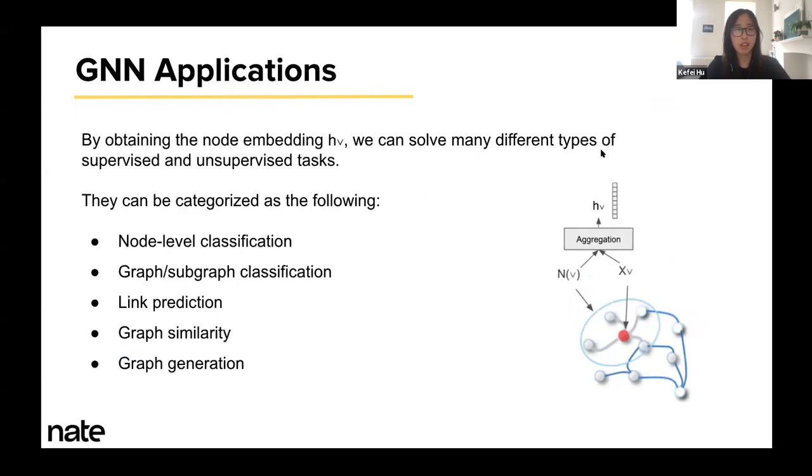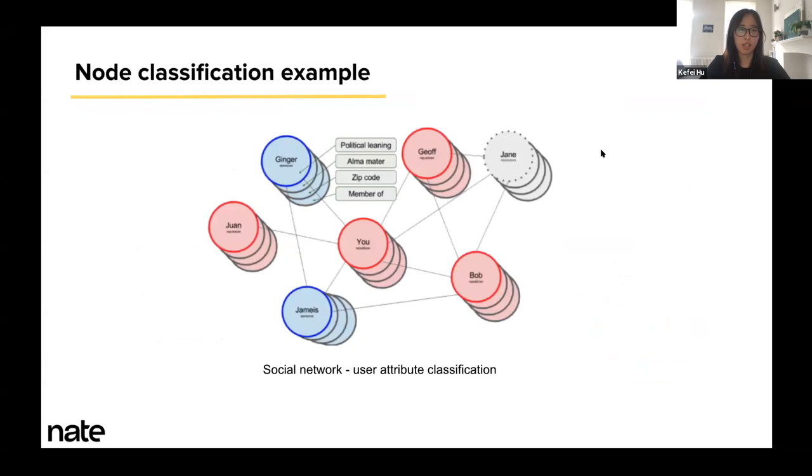Generally speaking, the real world applications based on graph neural networks can be categorized into the following groups. The first one, and the most common one, is node classification. This is when we classify the label of a node provided its node features and its connections. For example, in a social network, given a person's personal attributes and their connections, you may predict if this person belongs to a certain community or has a certain political leaning.